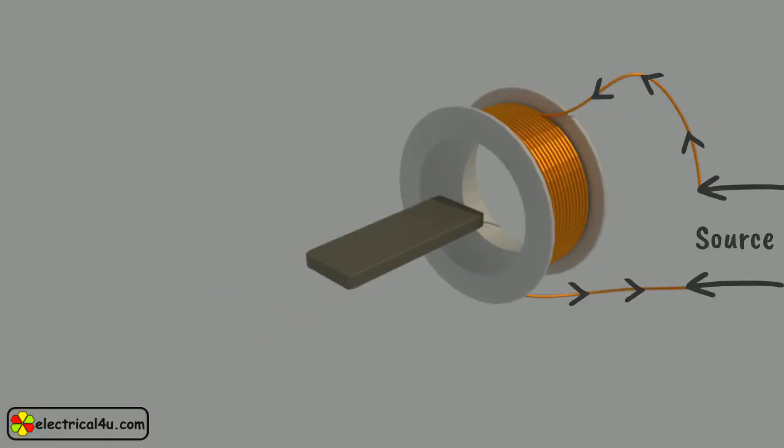This iron vein will move in such a way so as to increase the flux of the electromagnet. Thus, the vein tries to occupy a position of minimum reluctance. Thus, the force produced is always in such a direction so as to increase the induction of the coil.